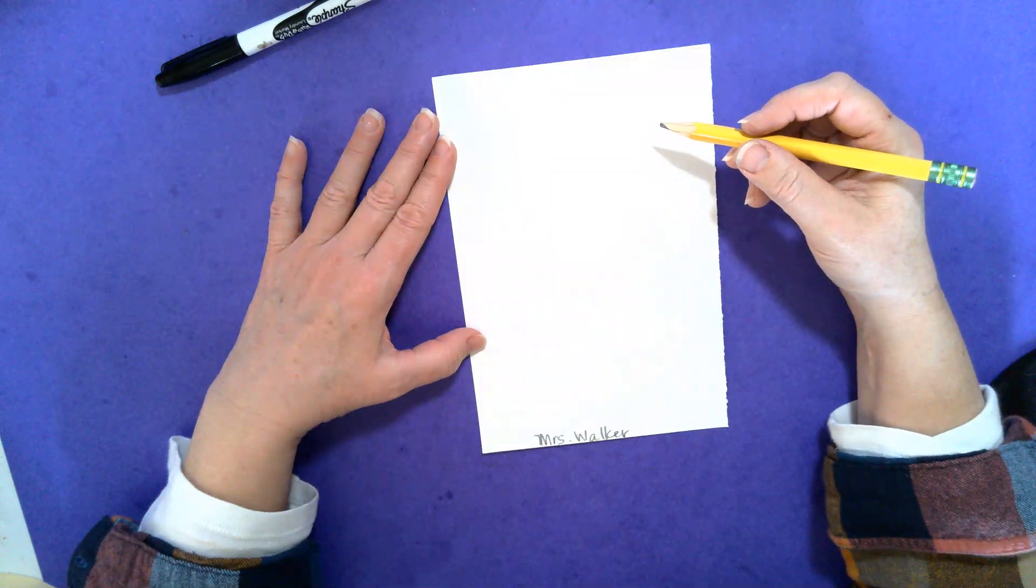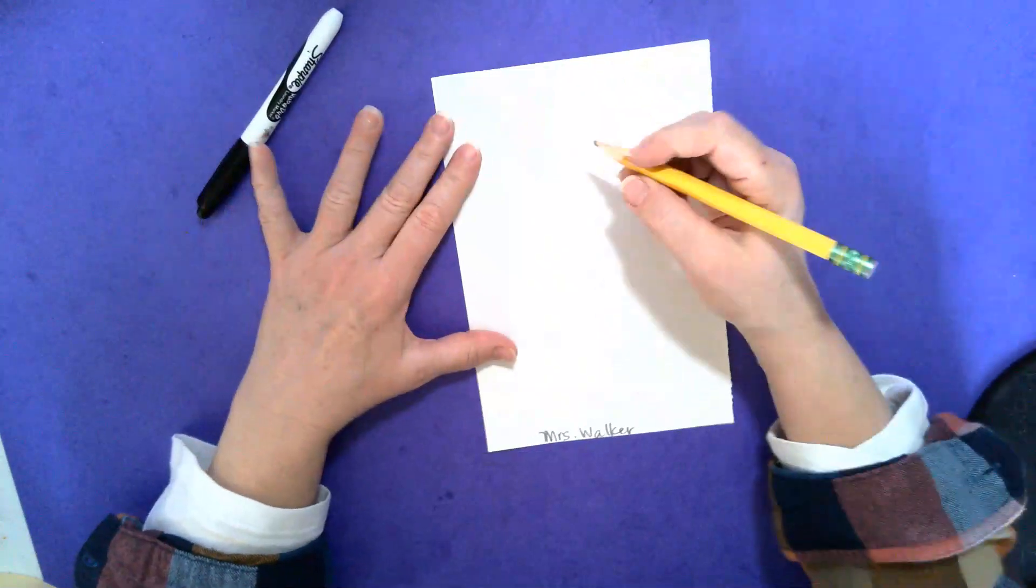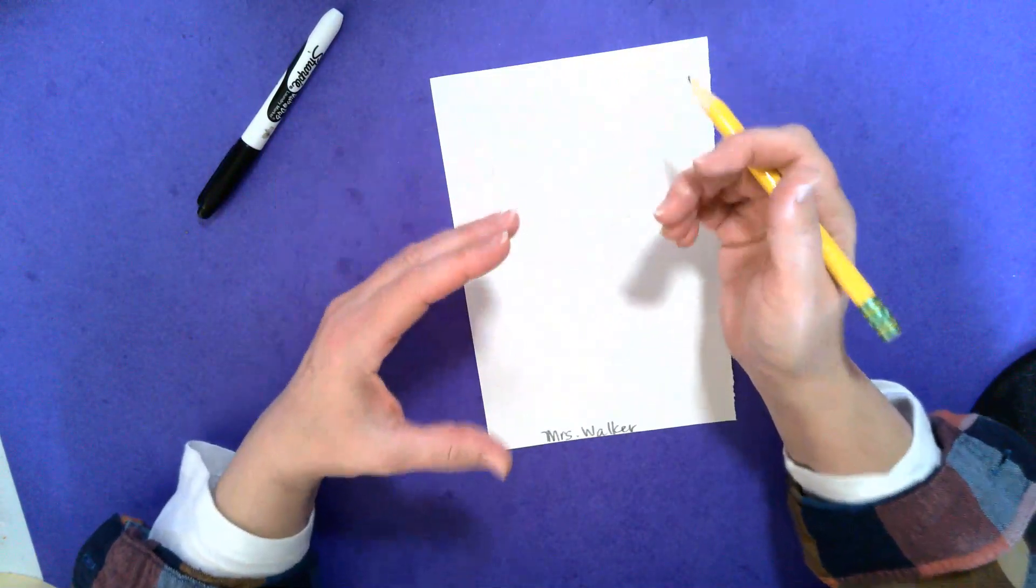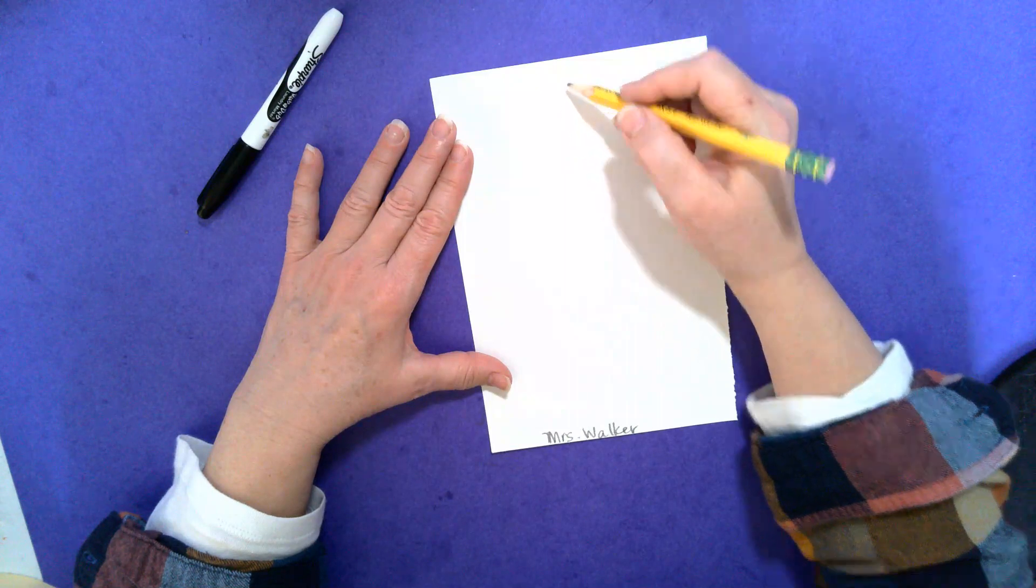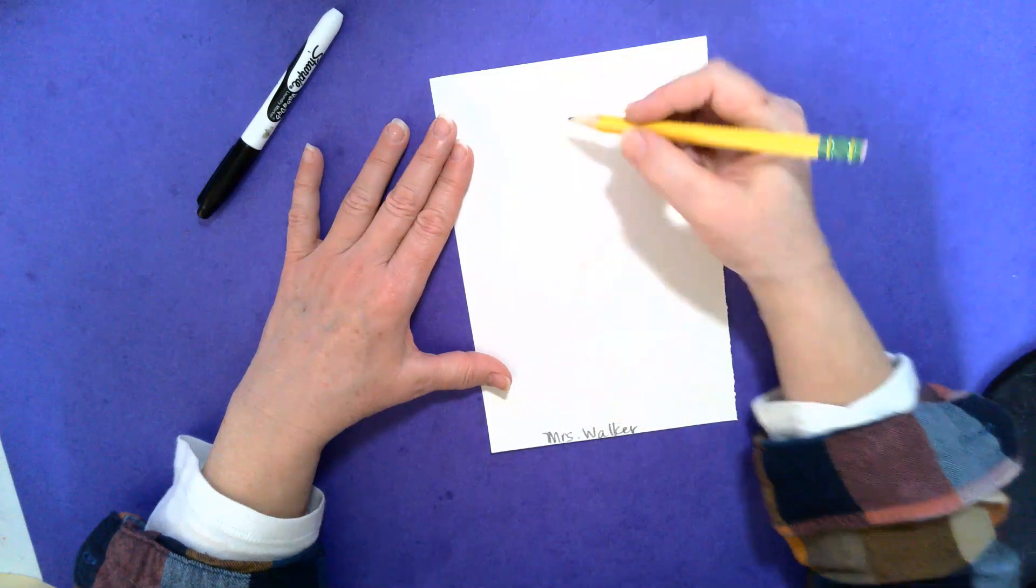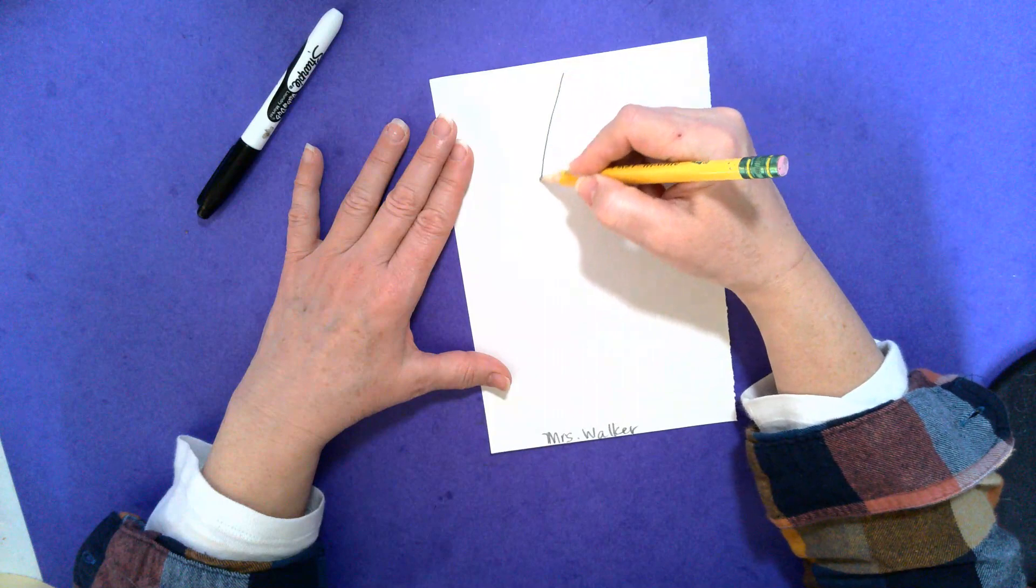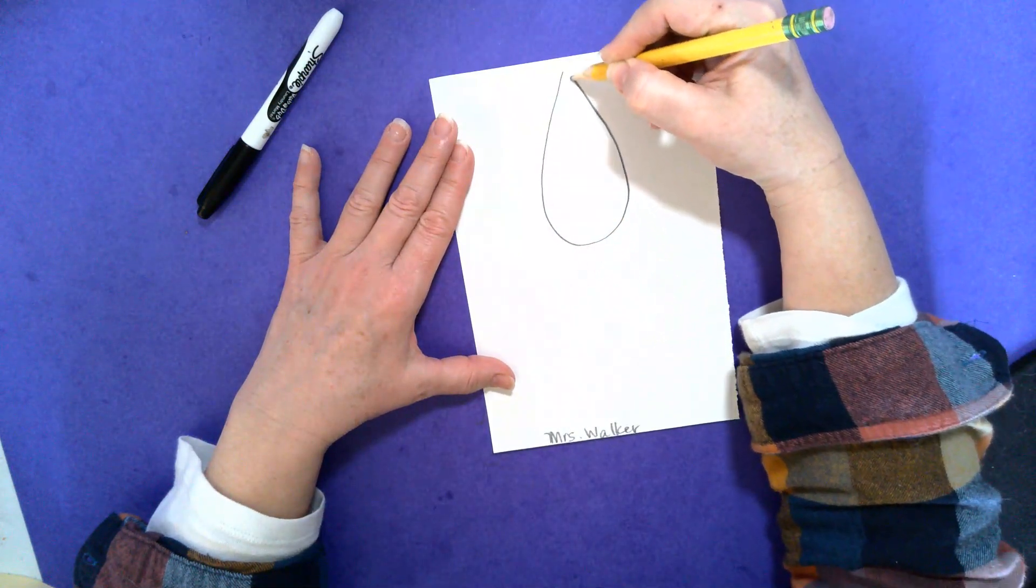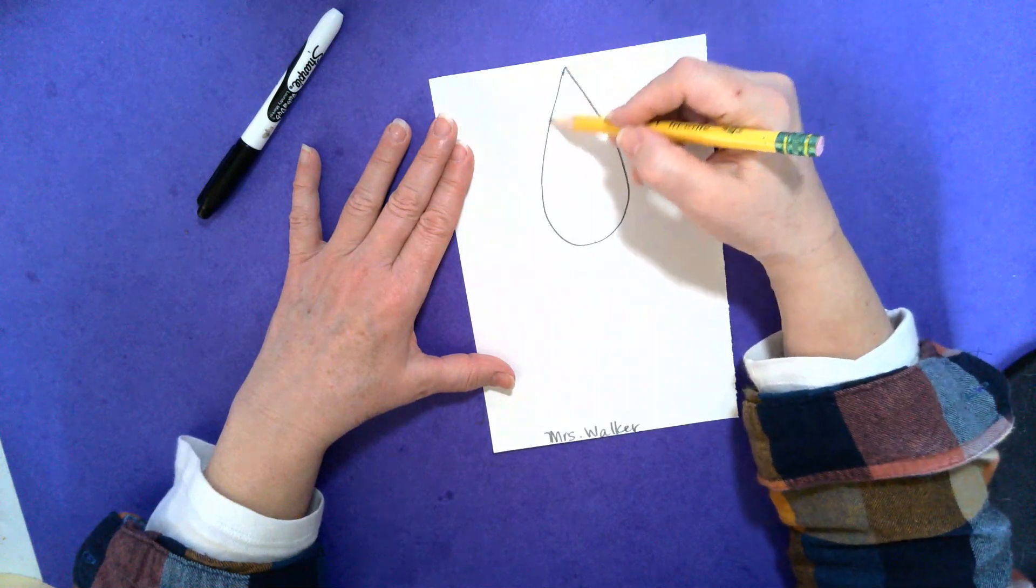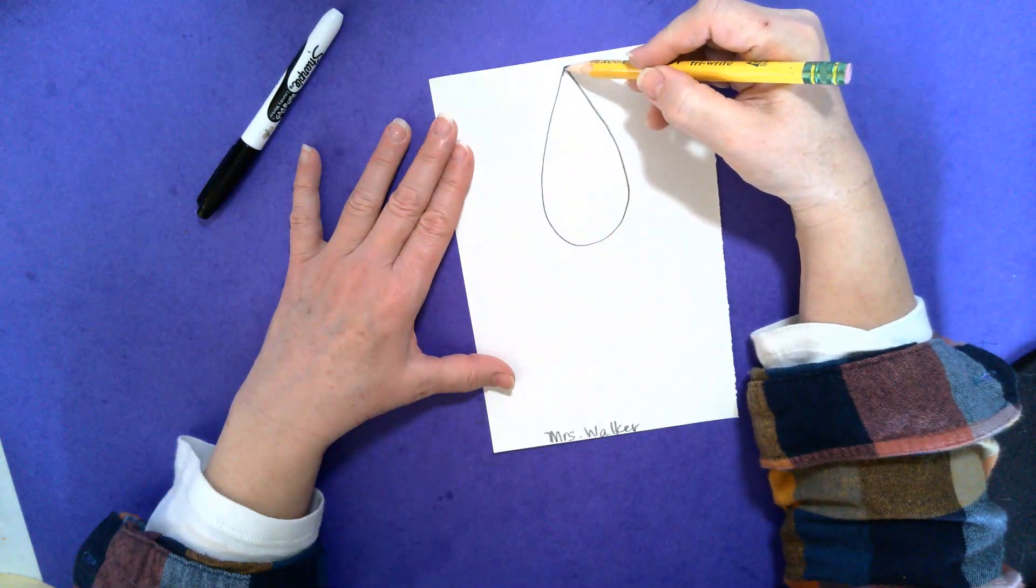So one way that you can make this, we'll try pencil, is if you want him to be looking straight at you. You're going to do the shape, and you want to start up high because you want to leave room for his tail feathers here. So you're going to make the shape of a raindrop, which is just where you start, go down, curve around, and come back up so it comes to a point.